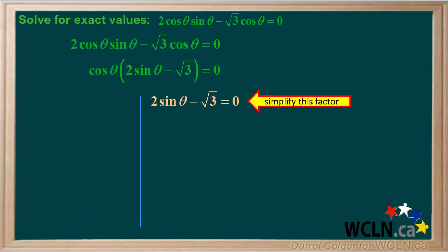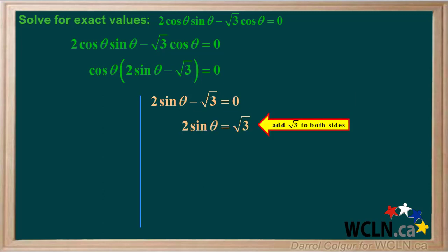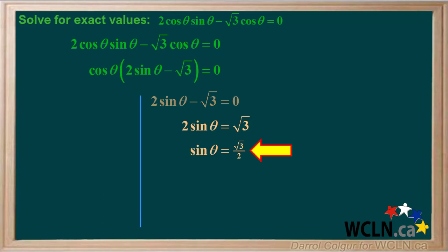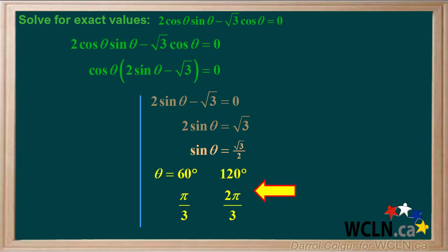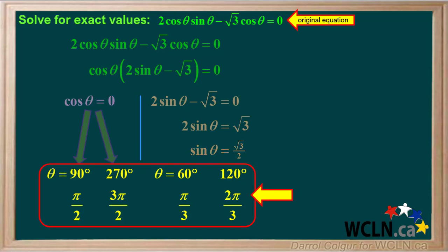Now we'll simplify the factor on the right: 2 sine theta minus root 3 equals 0. We'll add root 3 to both sides to give us 2 sine theta equals root 3. Therefore, sine theta equals root 3 over 2. Two angles that have an exact sine of root 3 over 2 are 60 degrees, which is pi over 3 radians, and 120 degrees, which is 2 pi over 3 radians.